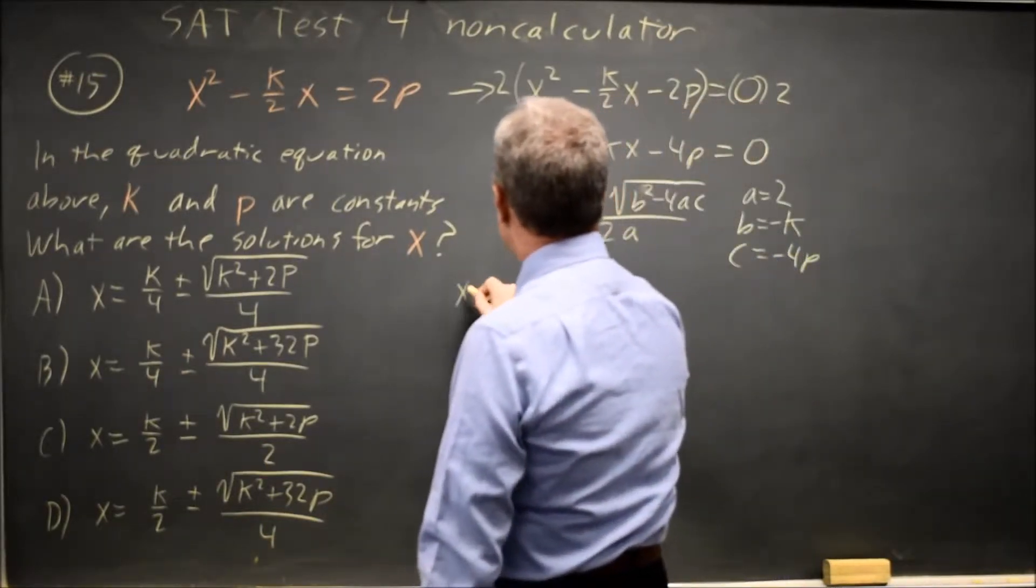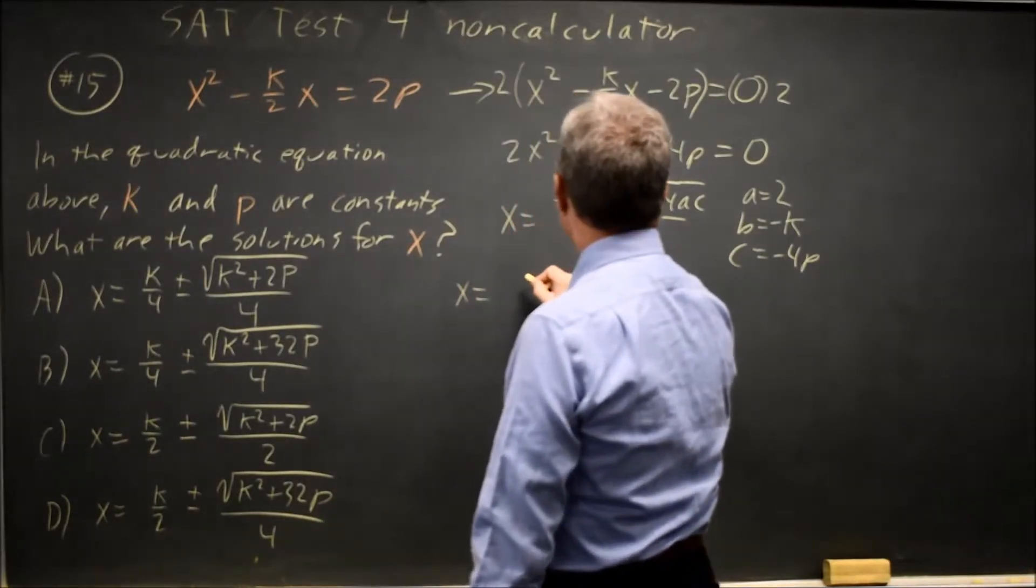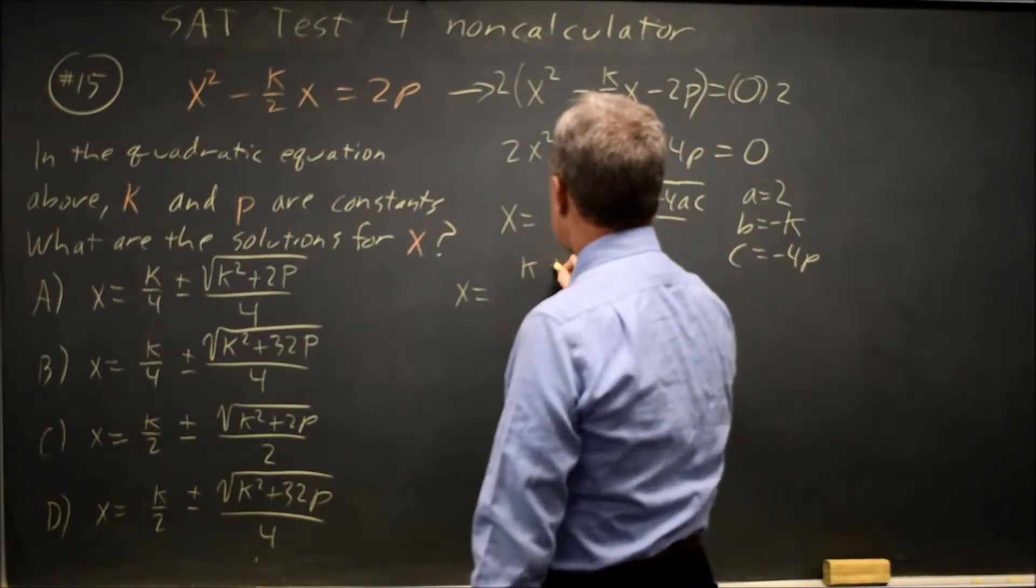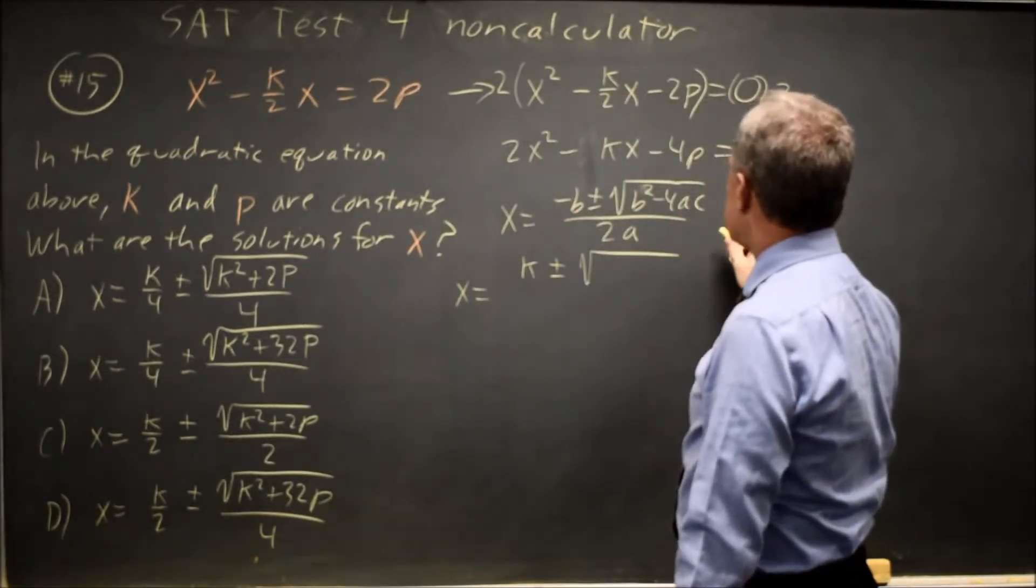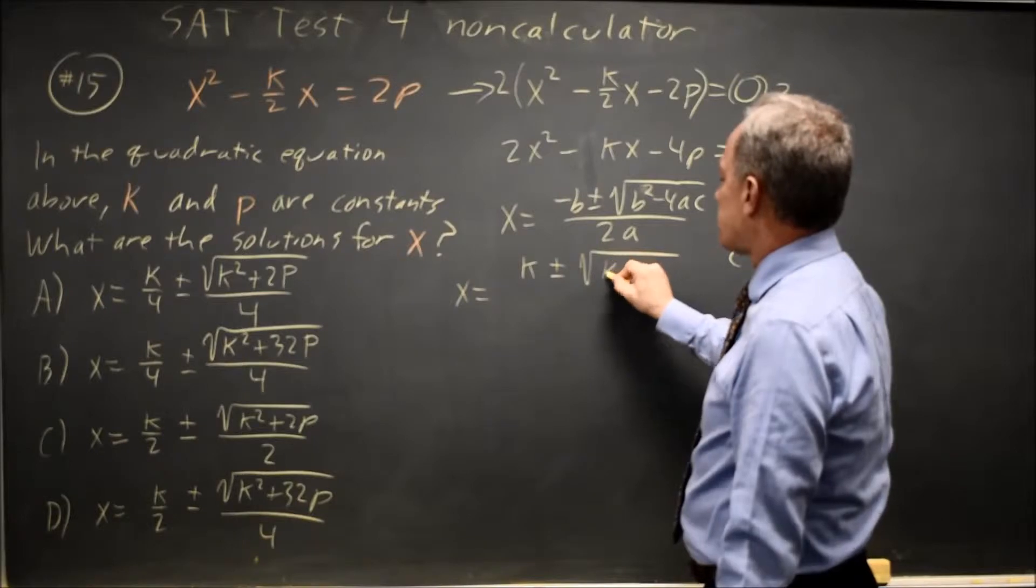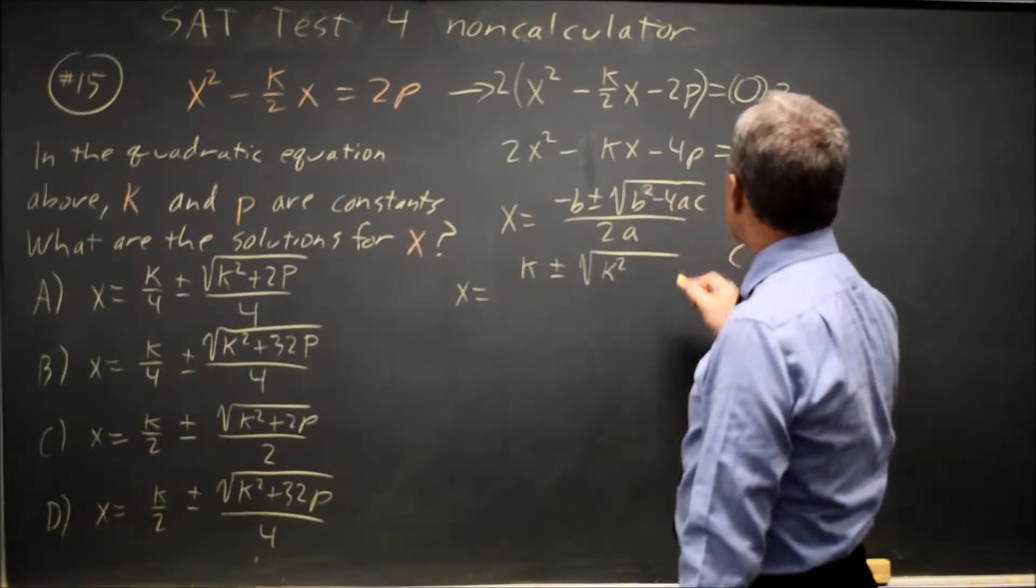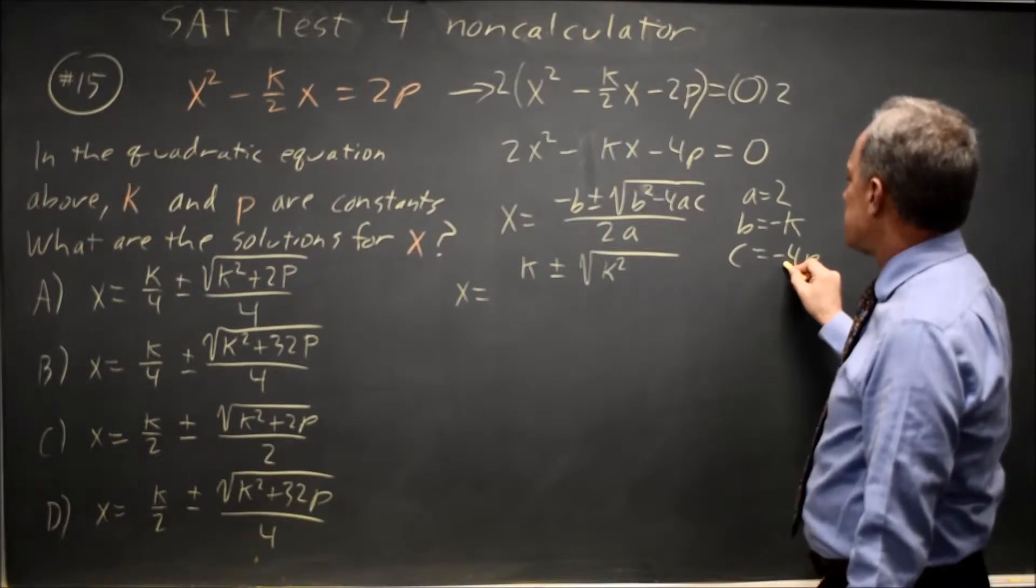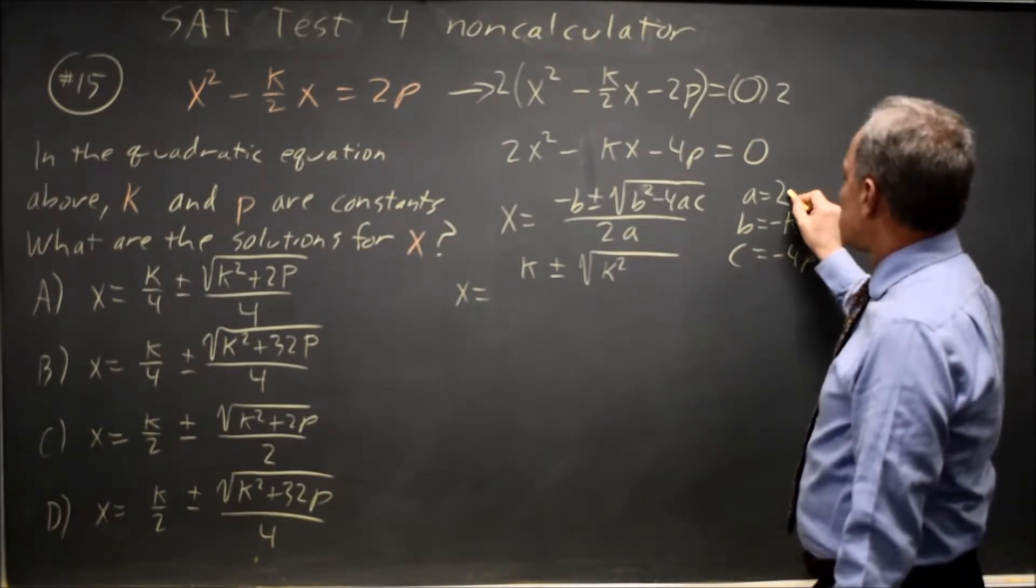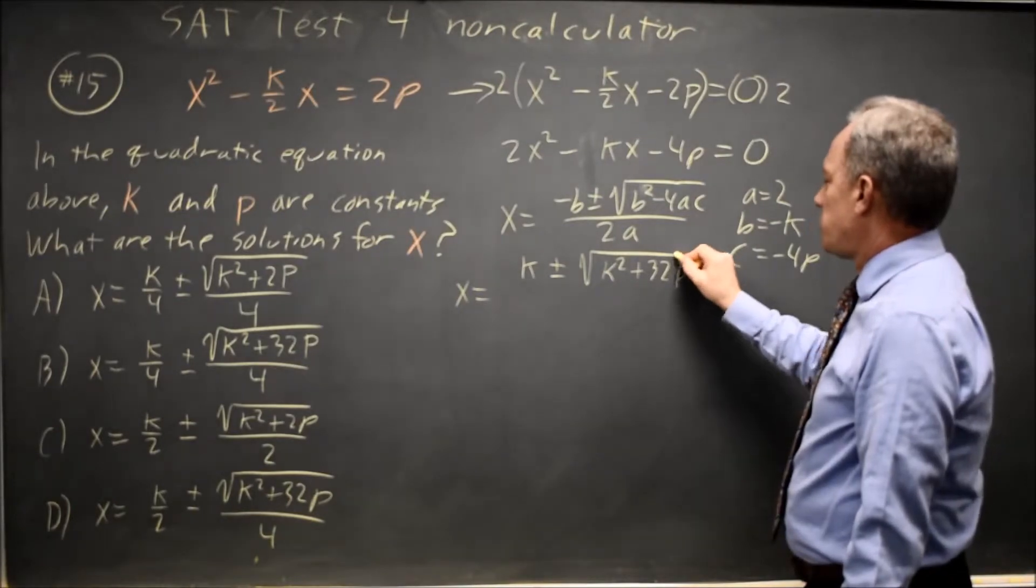So my x values are negative b, which is minus negative k is positive k, plus or minus square root negative k squared is negative k times negative k is positive k squared, minus 4ac. Negative 4 times negative 4 is positive 16 times 2 is positive 32 times the p.